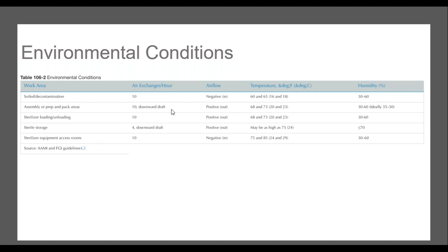Assembly or prep and pack areas: positive pressure, 68 to 73°F. Same for sterilizer loading and unloading. Sterile storage: positive pressure, temperature may be as high as 75°F, and less than 70% humidity.